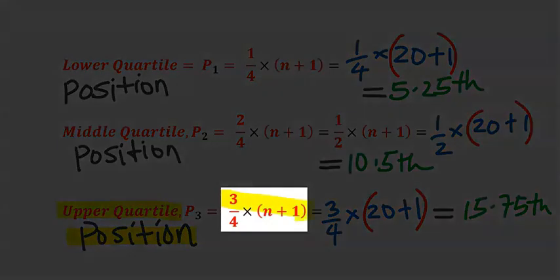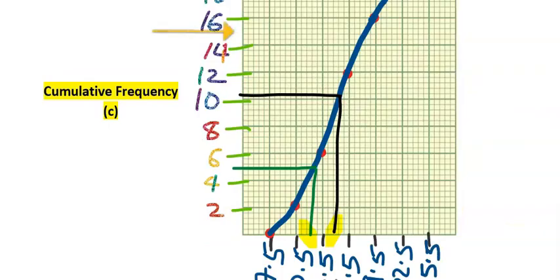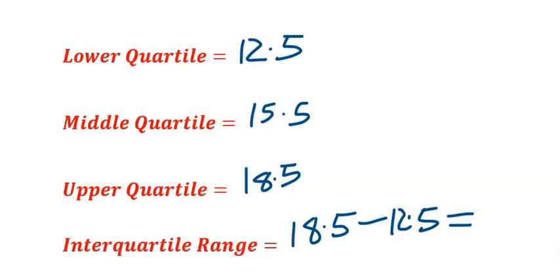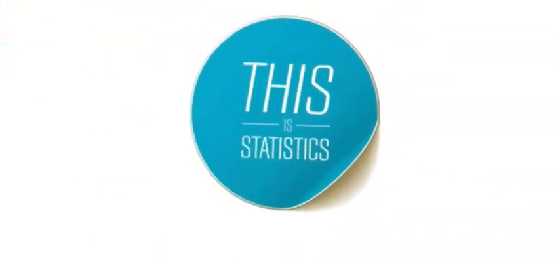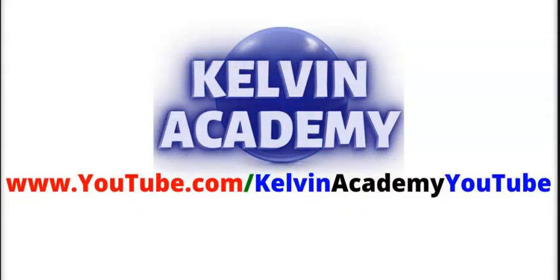Next, to find the upper quartile, we use the upper quartile position formula. When you solve this carefully, you get 15.75. We trace it down and the upper quartile is 18.5. The interquartile range is the upper quartile minus the lower quartile, which equals 6.